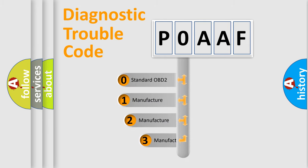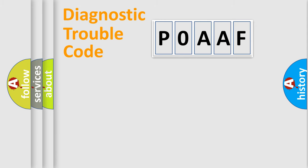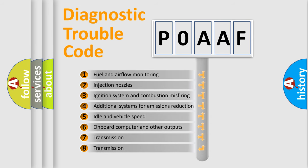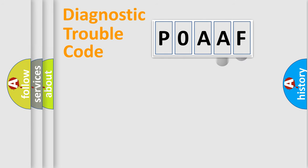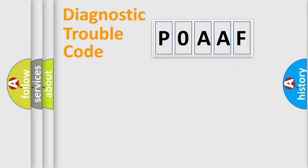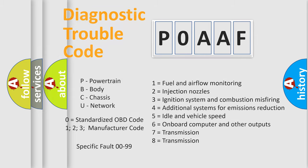If the second character is expressed as zero, it is a standardized error. In the case of numbers 1, 2, or 3, it is a more specific expression of a car manufacturer-specific error. The third character specifies a subset of errors. This division is valid only for the standardized DTC code, where only the last two characters define the specific fault of the group — and only when the second character is zero.